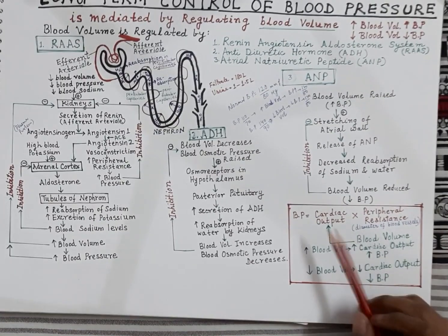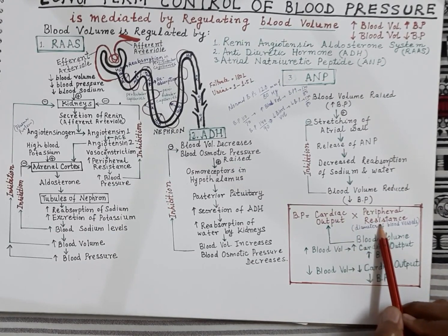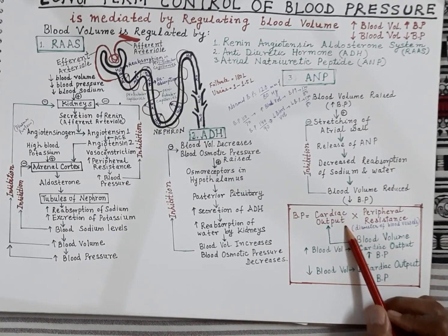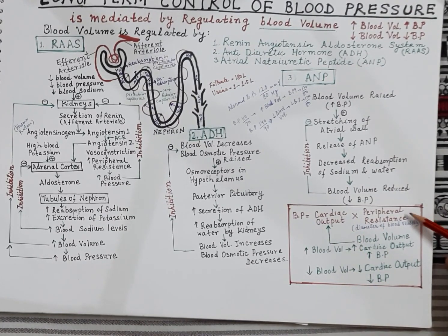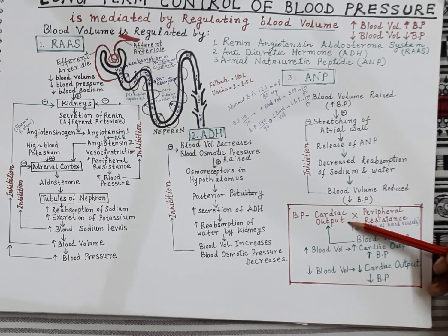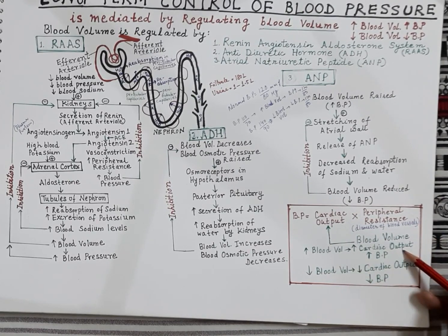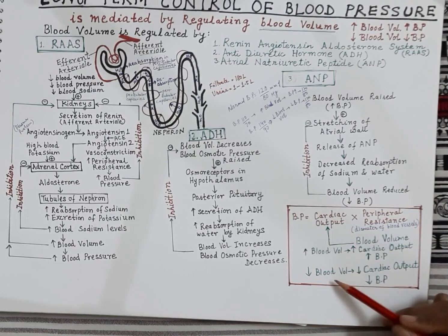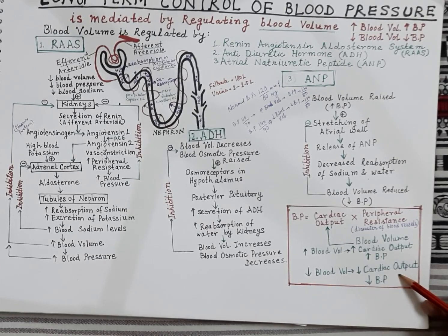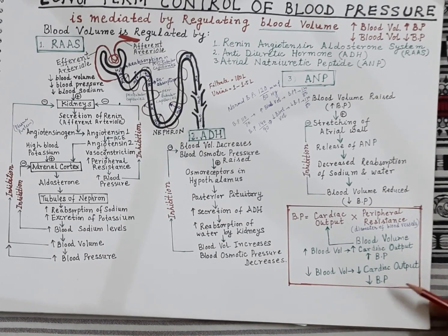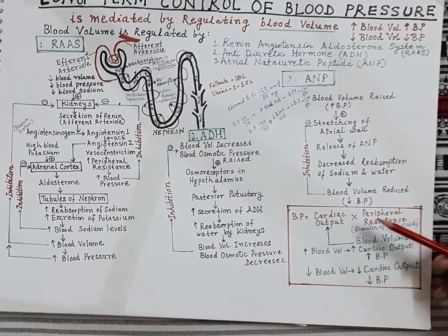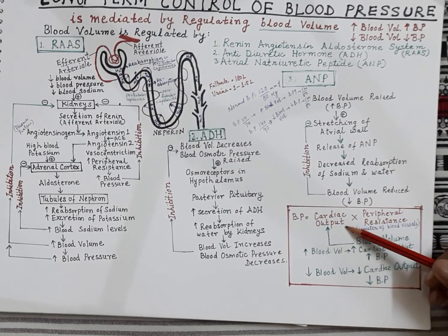Blood pressure is equal to cardiac output into peripheral resistance. Cardiac output depends on many parameters, and peripheral resistance also depends on many parameters. Cardiac output is equal to heart rate into stroke volume, so cardiac output depends upon blood volume. If body ki blood volume badati hai, cardiac output badha, blood pressure bhi badha. If body ki blood volume reduce hoti hai, there is automatically a fall in cardiac output and blood pressure bhi kam hoga. So it is the blood volume which determines the cardiac output, and the blood pressure depends upon the cardiac output.